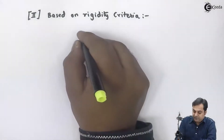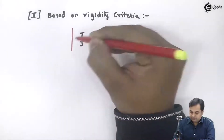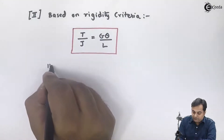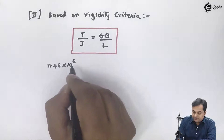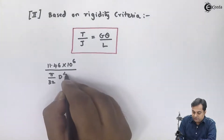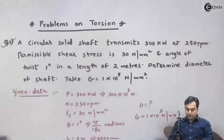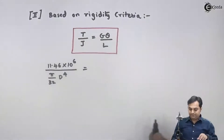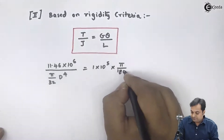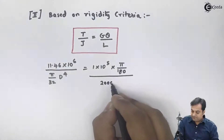Now using the rigidity criteria, the formula is T by J equals G theta by L. Substituting: T is 11.46 into 10 raised to 6, J is pi by 32 times D raised to 4 for a solid shaft, G is 1 into 10 raised to 5, theta is pi by 180 radians, and length L is 2000 mm.